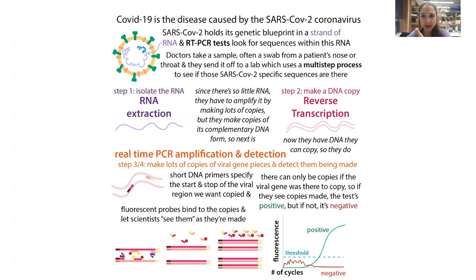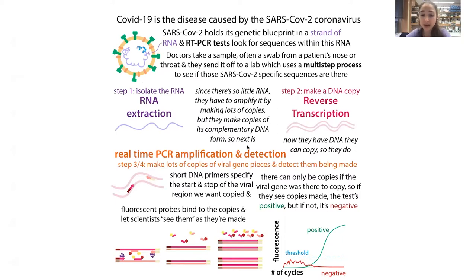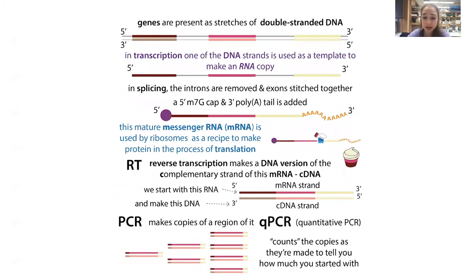RT-PCR is the same technique used in the coronavirus test. You're making DNA copies of RNA in the reverse transcription step — in that case, you're making DNA copies of viral RNA. Then in the PCR amplification and detection step, you're making DNA copies of those and measuring them. So you can use it to detect viral RNA, but more commonly we're using it to detect messenger RNAs.